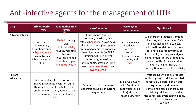Sulfamethoxazole, as a sulfa drug, can cause rash and photosensitivity, as well as GI upset including nausea, vomiting, and diarrhea, as well as hepatitis, anemia, and thrombocytopenia. Patients should take TMP-SMX with at least eight fluid ounces of water to avoid crystal formation in the kidneys and reduce nephrotoxicity risk. Patients should also use sunscreen and avoid tanning beds due to the photosensitivity.